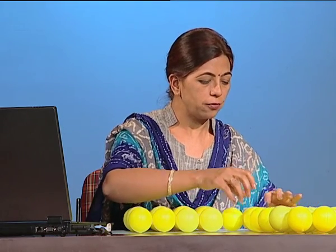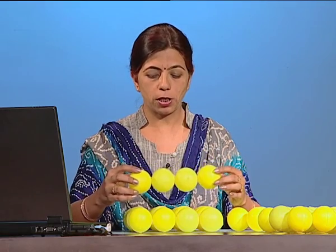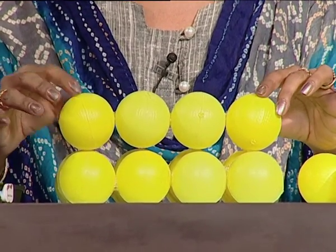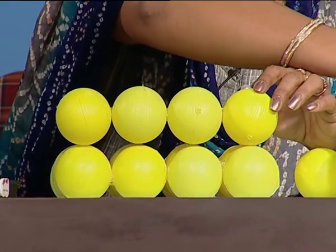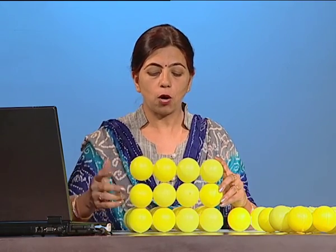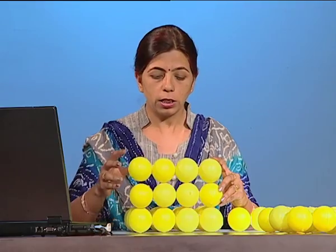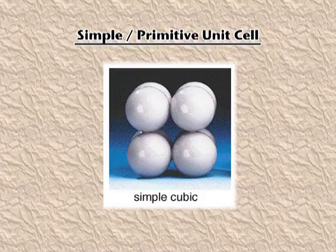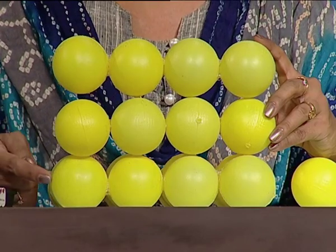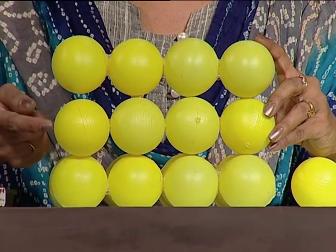Now if I want to give the third dimension — that is height — I will arrange atoms above the existing layers. I have three options. The first option is to keep the third layer directly above the first layer, giving length, breadth, and height — this is three-dimensional packing. The unit cell generated will be a simple or primitive unit cell. Since the pattern of the first layer is repeated, it is known as AAA type.